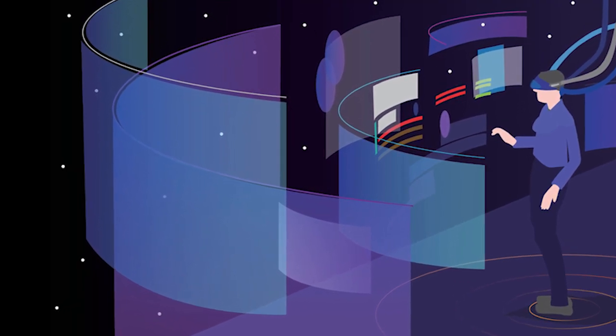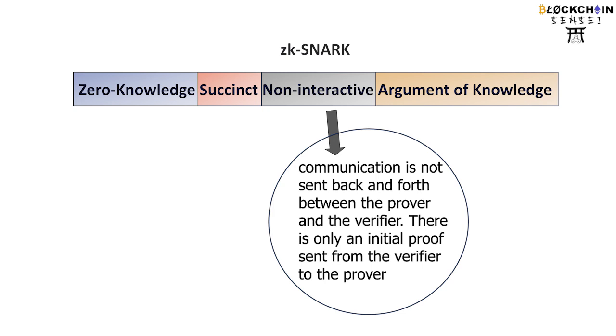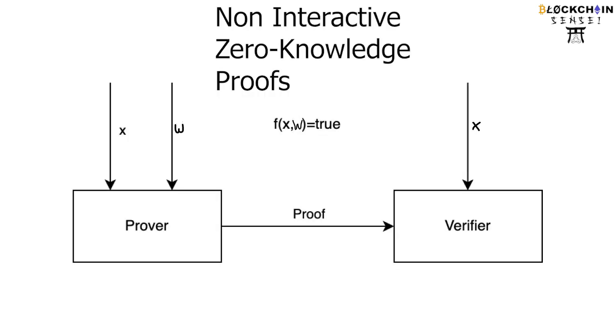Well, all of this is made possible with zero-knowledge proofs. Now, as explained earlier, the non-interactive part of zero-knowledge succinct non-interactive arguments of knowledge means that there is no subsequent interaction other than the initial single one, which is the sending of that proof from the prover to the verifier.